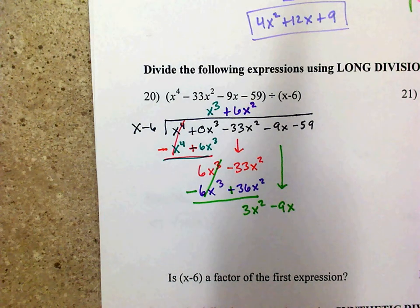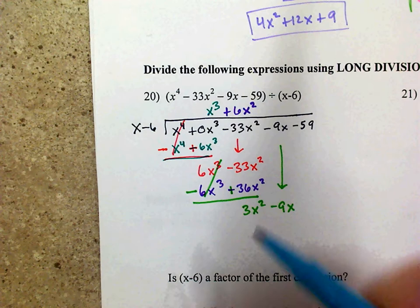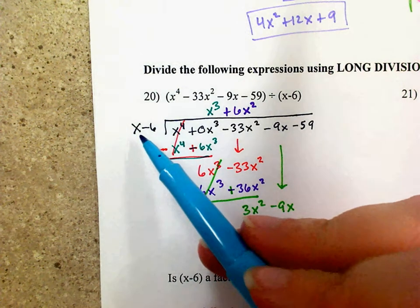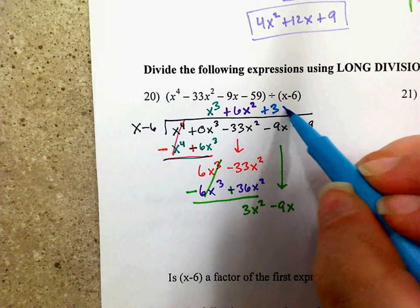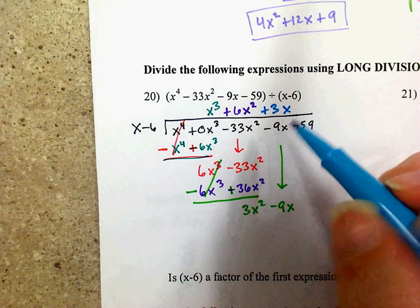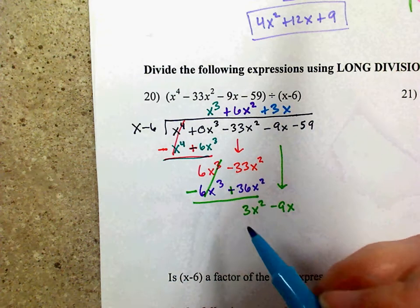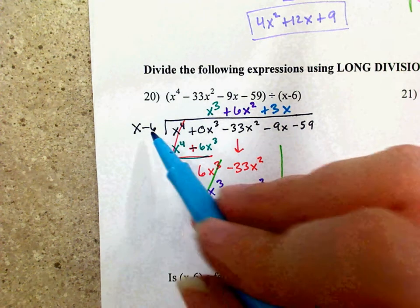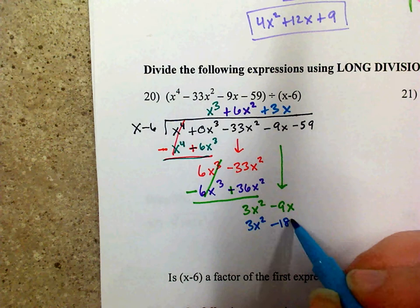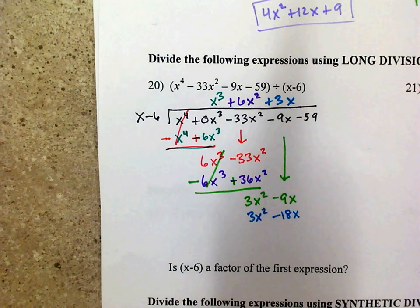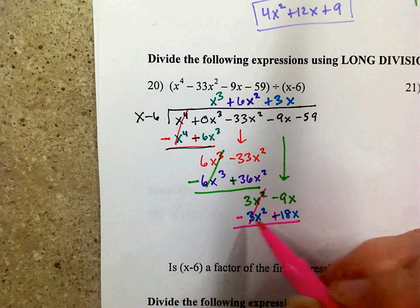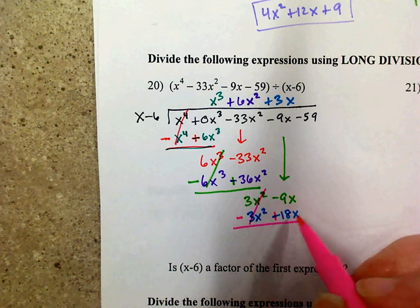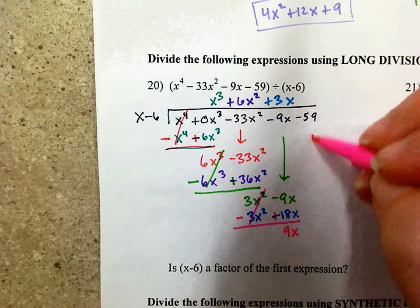I need to cancel out 3x squared. I have x, so I need a coefficient of 3, meaning I need 3x — it goes right above the x position. 3x times x is 3x squared, and 3x times negative 6 is negative 18x. Subtract by changing signs, those cancel out. Negative 9x plus 18x is 9x. Bring down the minus 59.